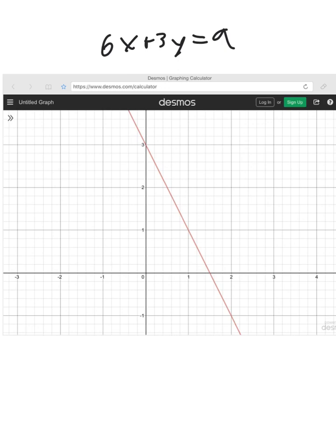So at the top of the screen, you'll notice that we have our equation 6x plus 3y equals 9. Now, if we wanted to find the slope just by looking at the equation, it would be a lot more difficult because you've got to reorganize and set it into y equals mx plus b.